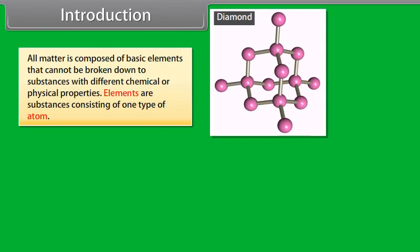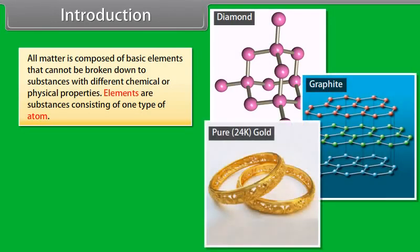All matter is composed of basic elements that cannot be broken down to substances with different chemical or physical properties. Elements are substances consisting of one type of atom.